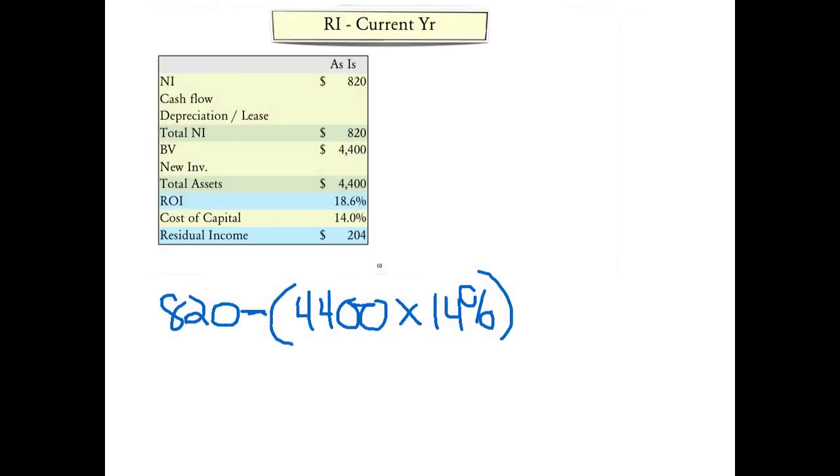Since residual income is not as commonly used, let's first take a look at how it's calculated. We take the net income, as currently stated, as $820, and we scale that by the assets available to the manager times the required return of 14%. If we do this calculation, we see the current residual income is equal to $204.